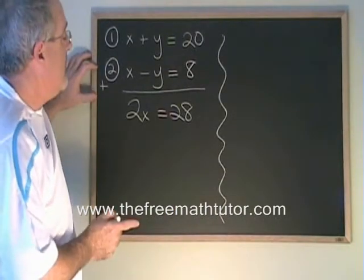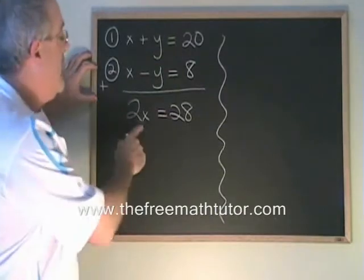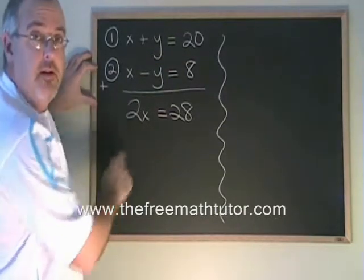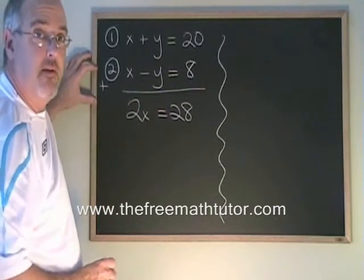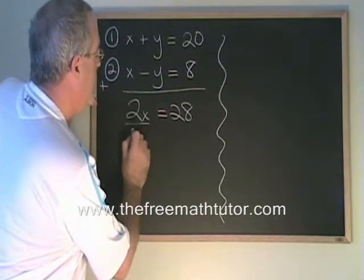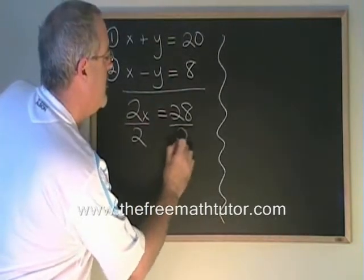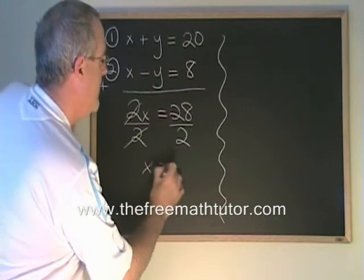The result of this is that instead of having two equations with two variables, we have a single equation with a single variable. In fact, it's a very small equation and it doesn't take very long at all to solve it. Since x is being multiplied by 2, I will divide both sides by 2. These cancel, and x is equal to 14.